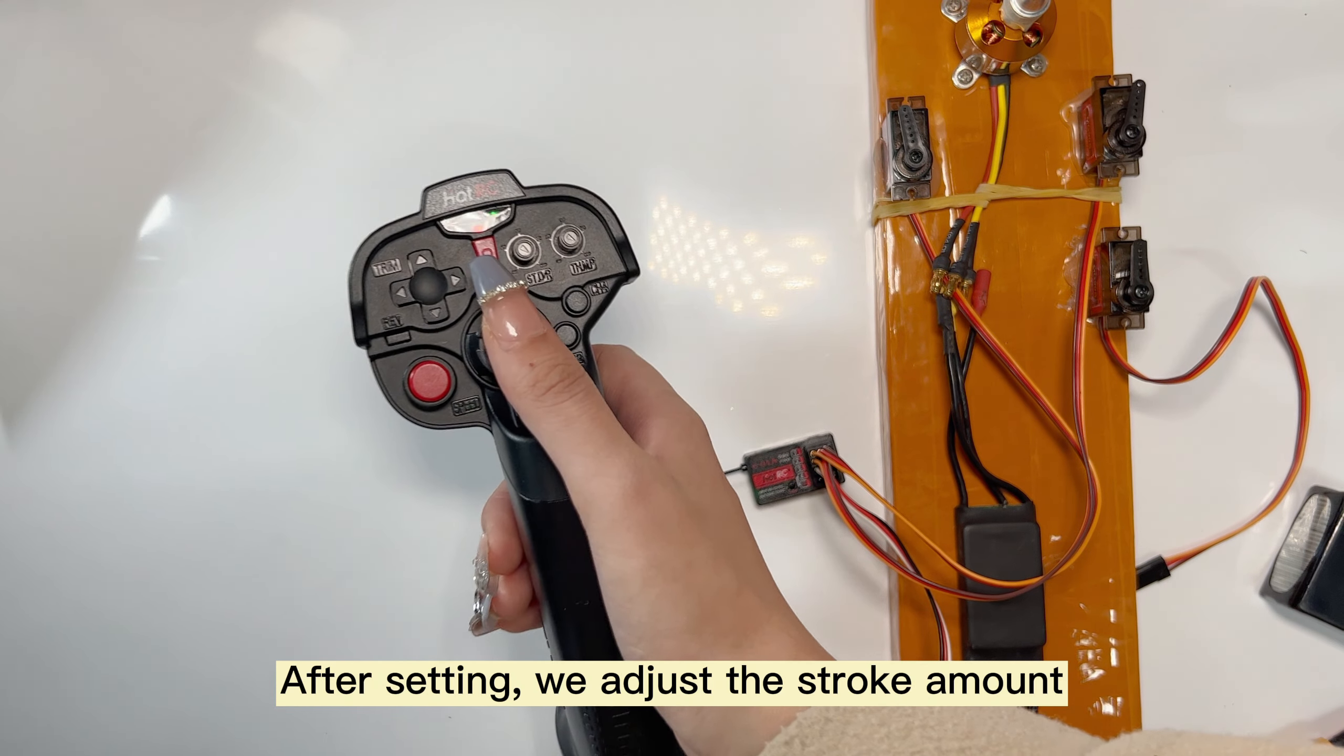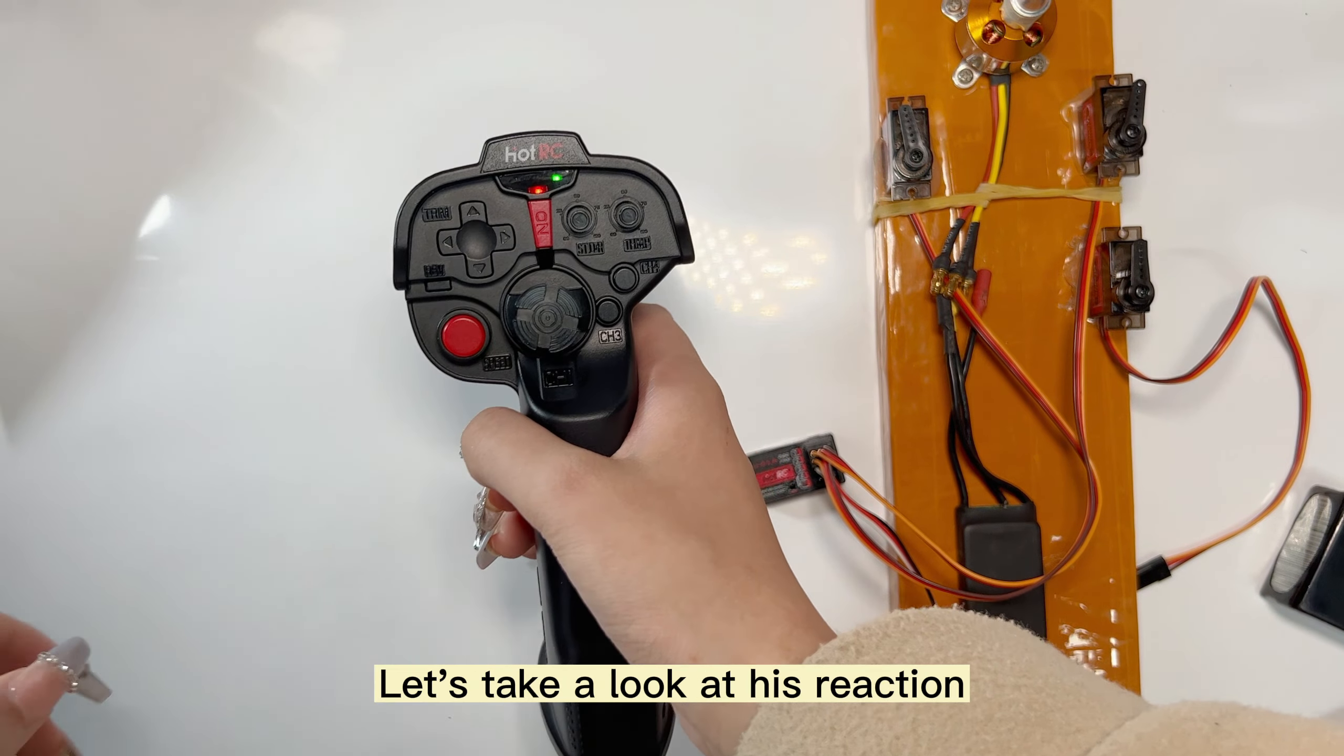After setting, we adjust the stroke amount. The current stroke amount of CH2 is 100%. You can see the reaction of the steering gear. We adjust the CH2 knob. I'm now adjusting this knob to a value of 0.